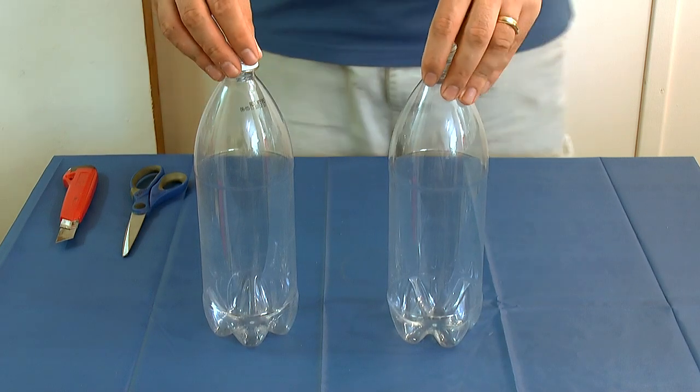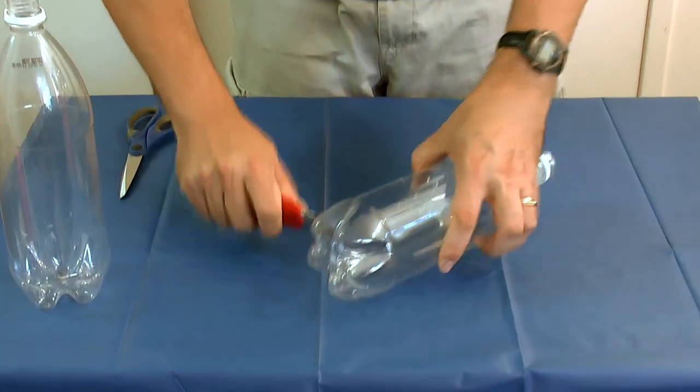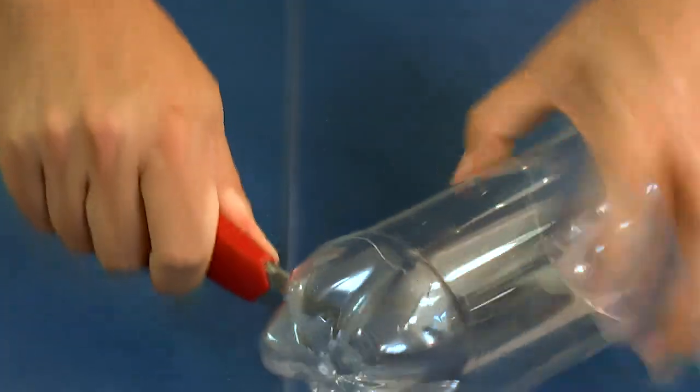You need to get two of these bottles and cut the bottom and the top off. Just use a Stanley knife for a rough cut.